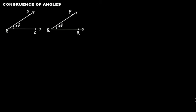How will we define congruence of angles? In this figure we have one pair of angles. Angle ABC is 40 degrees and angle PQR is also 40 degrees. Now if you superpose angle PQR over angle ABC, then what will happen?